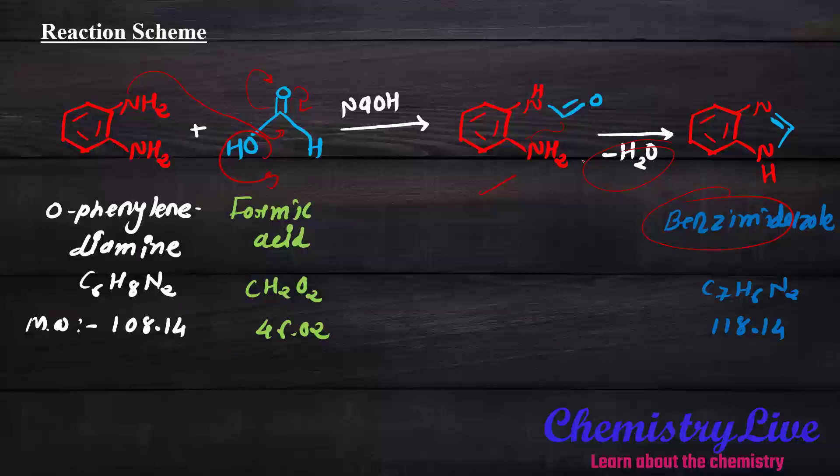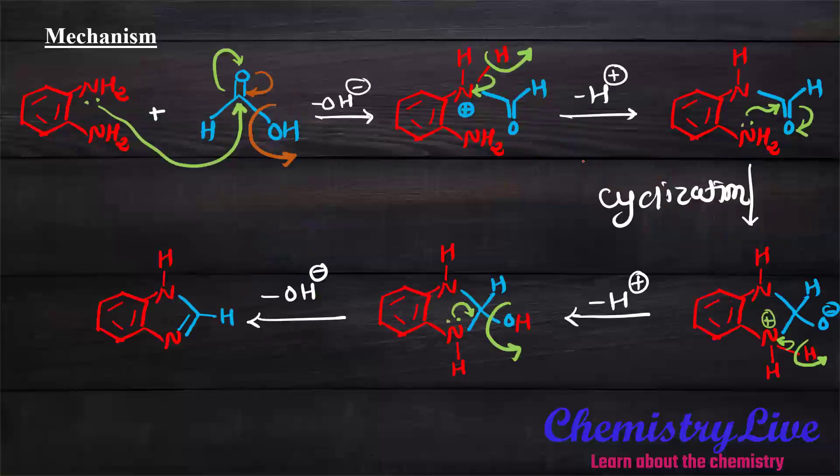To better understand the reaction scheme, we need to look at the mechanism and how it proceeds. In the mechanism, as I discussed, the lone pair of nitrogen attacks the carbon because here it first possesses the inductive effect.